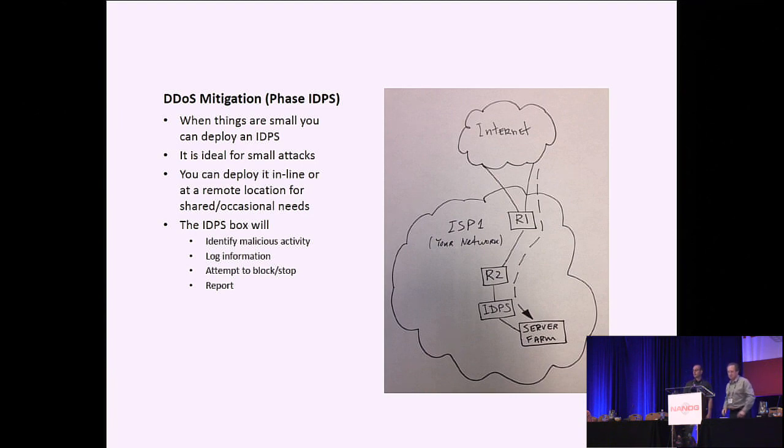That is really not much different than a customer who's dealing with mitigation. And what a lot of people have done is basically deploy a device such as an intrusion detection and prevention system. It's very easy to set up. It works great for small attacks. What the IDPS box will do is we'll identify malicious activity, we'll log information, we'll make an attempt to block traffic and we'll report.